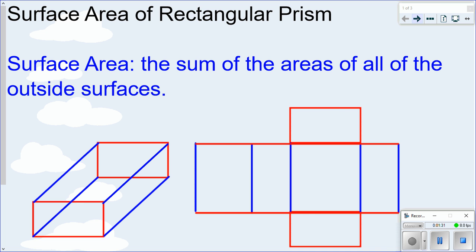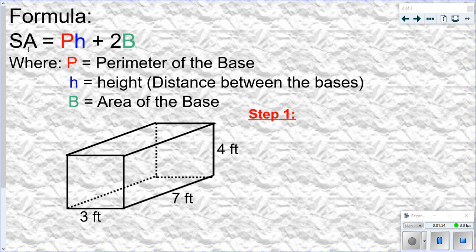Let me show you how this formula works. The formula is: SA equals P times H plus 2 times big B. SA stands for surface area. I call it big B because for a rectangle, small b times H gives area where small b is the base — big B means something else. P stands for the perimeter of the base, H stands for the height of the prism measured as the distance between the bases, and big B stands for the area of the base.